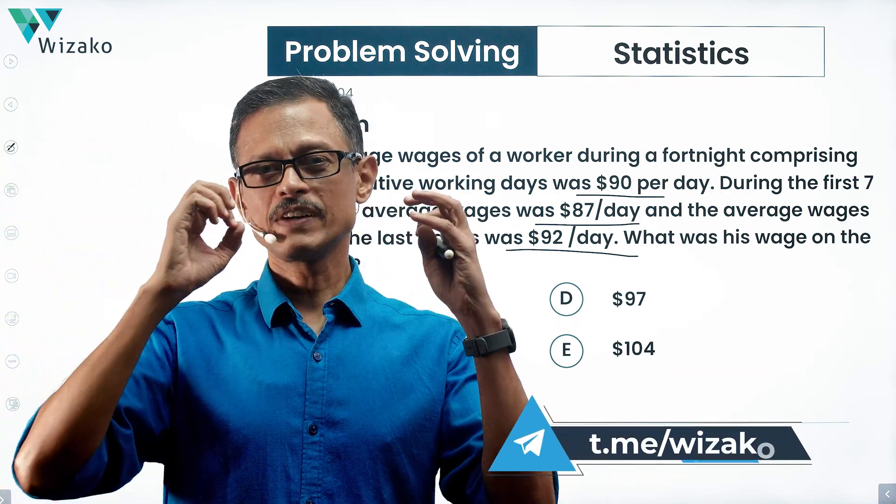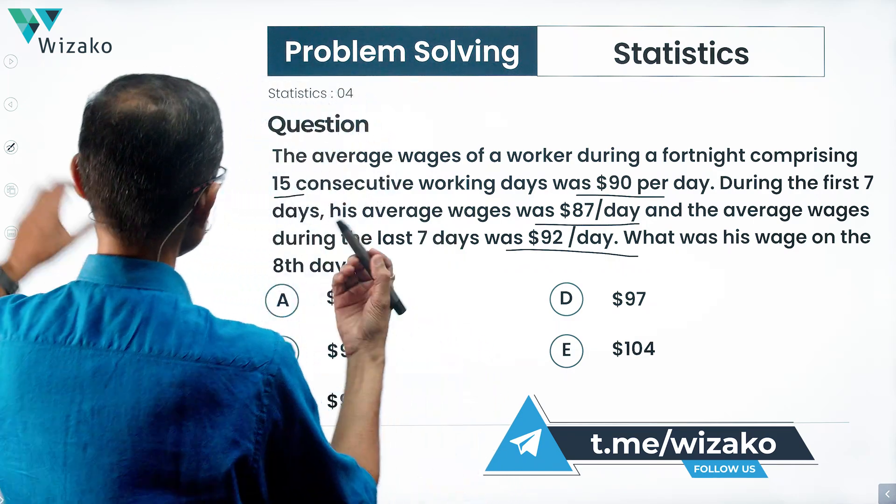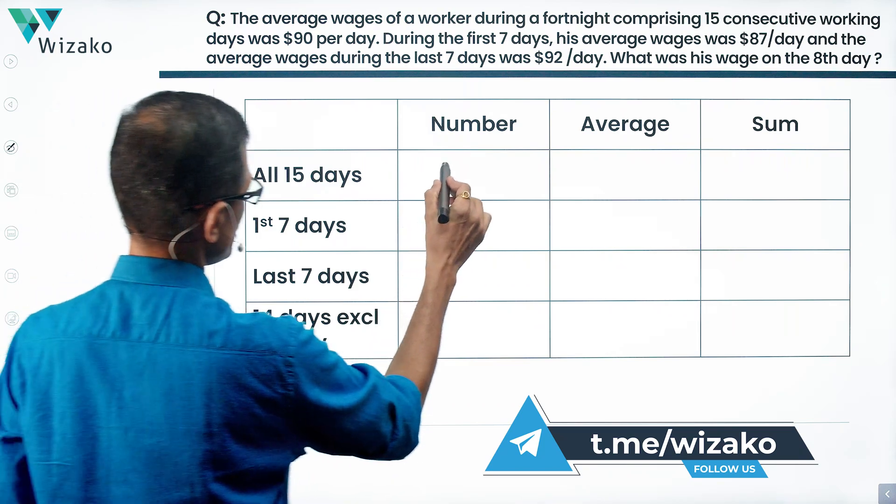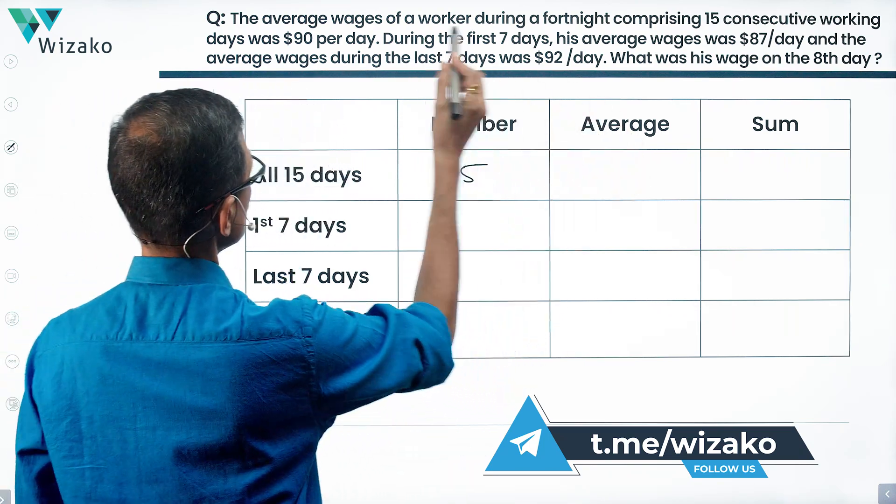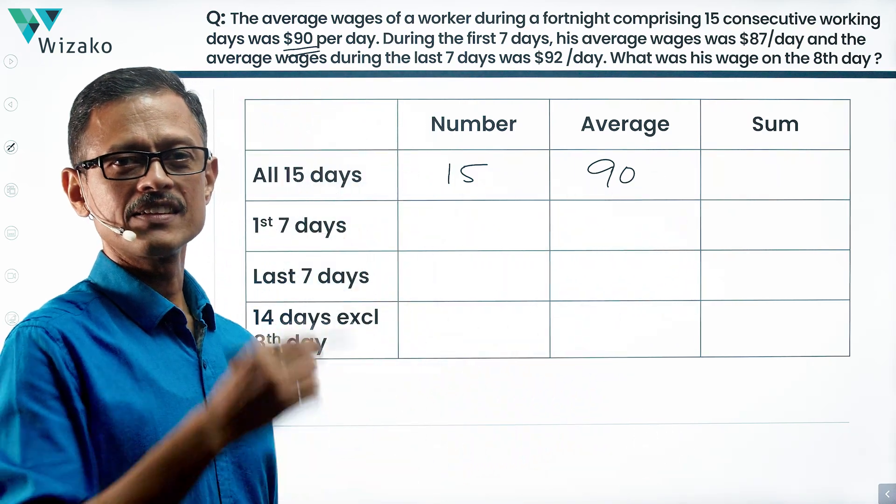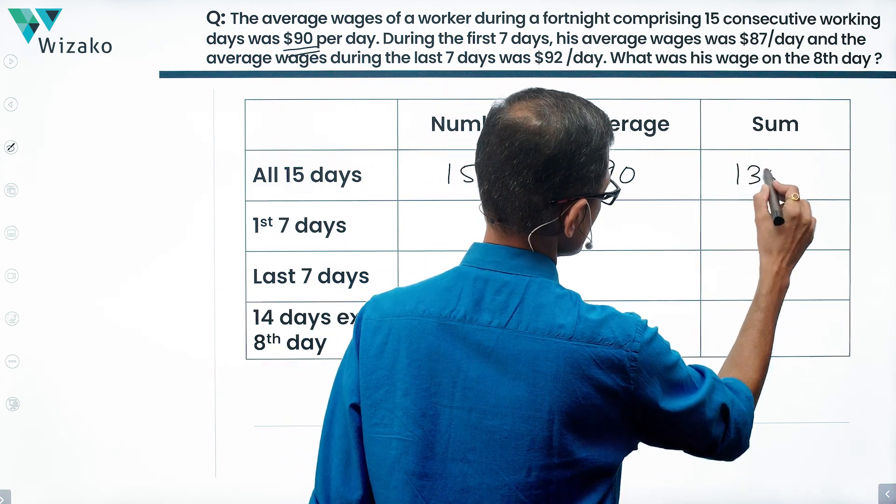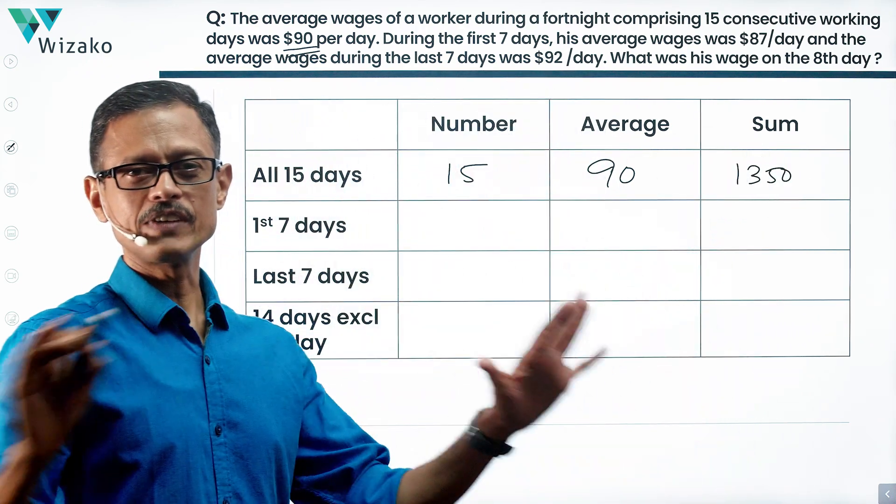Again, a question set to fit beautifully into the standard framework that we use for averages. Let's get started. All 15 days, number of days is 15, average wages per day is equal to 90. So sum of wages for all of these 15 days is number times average, 15 times 90, which is equal to $1350. This is what he took home for all 15 days.